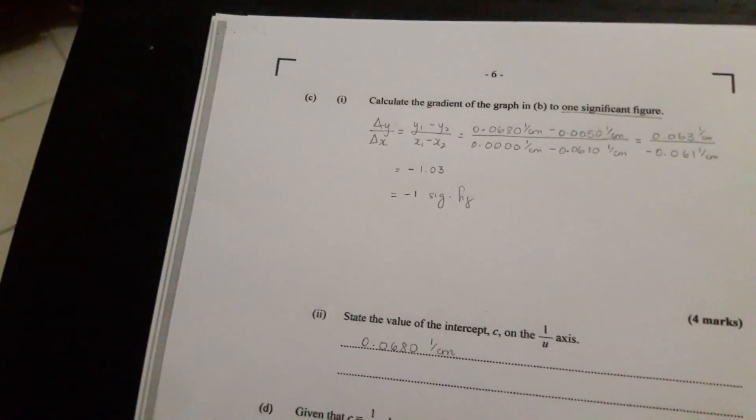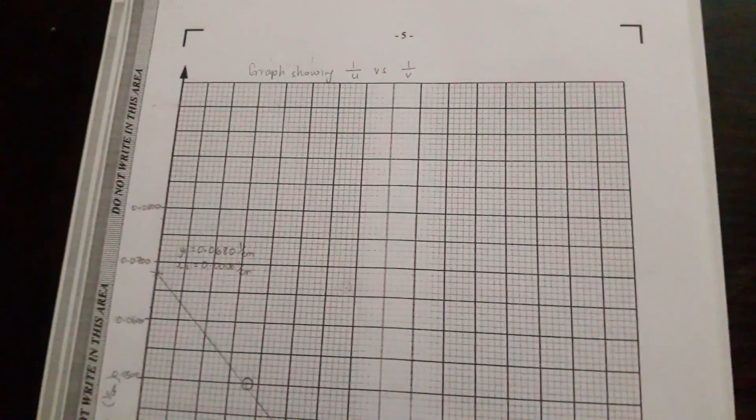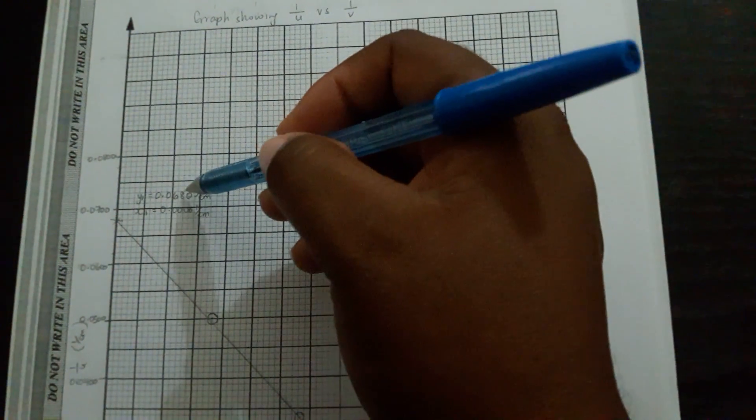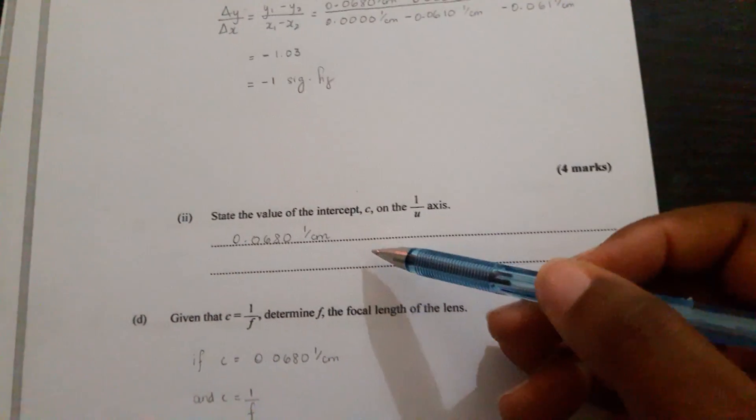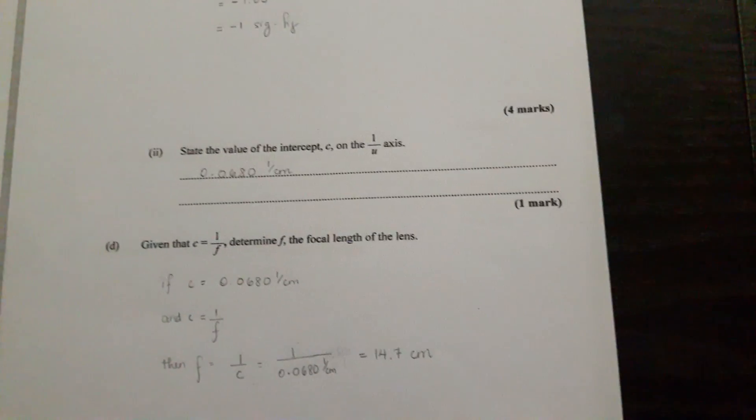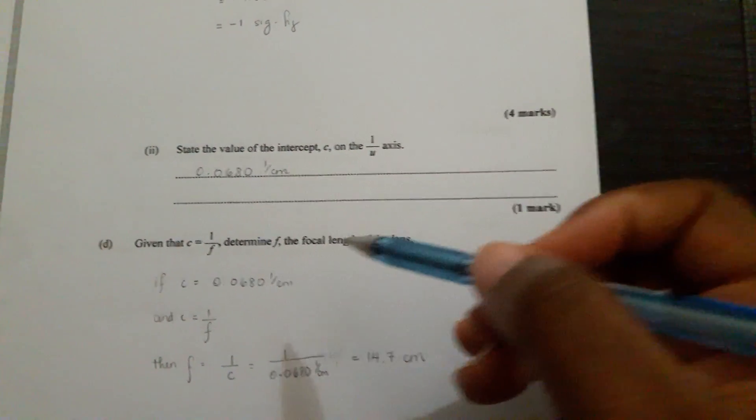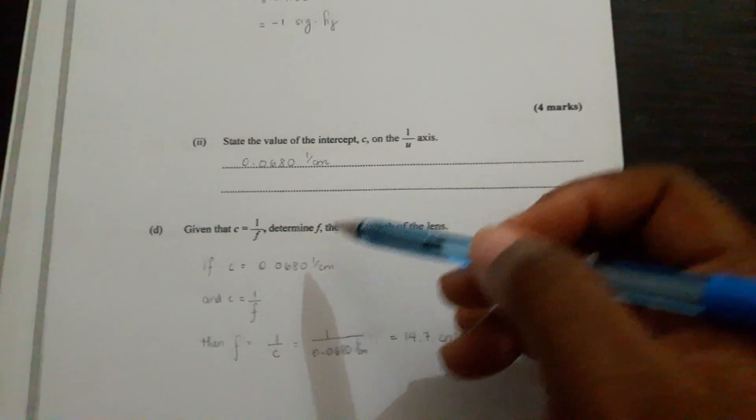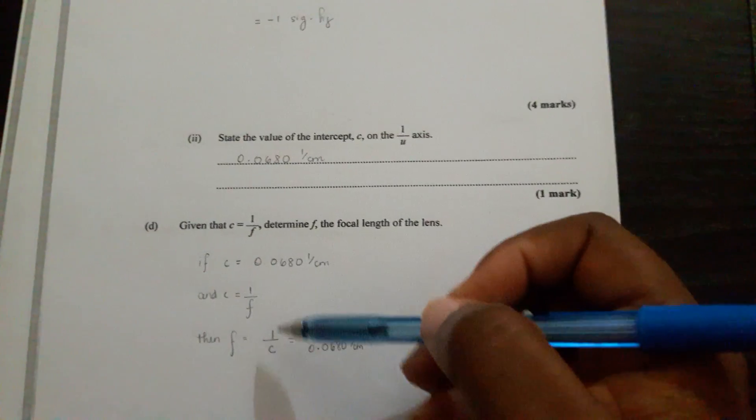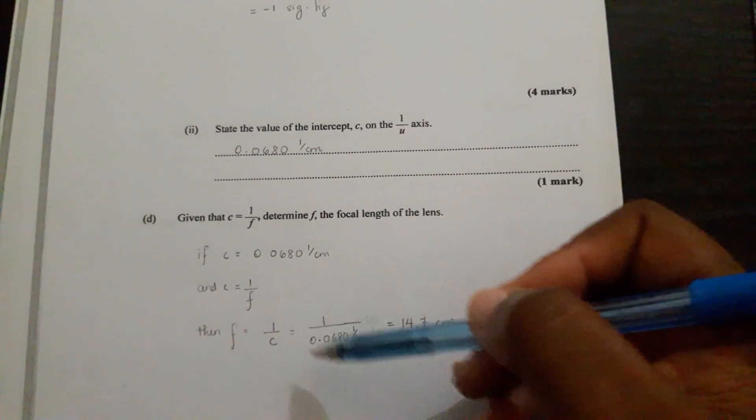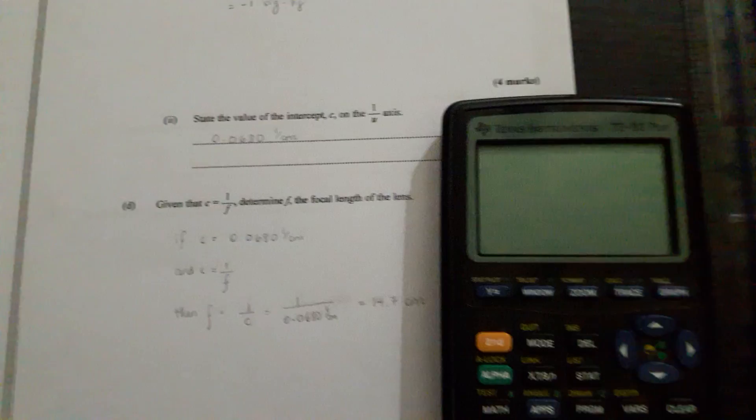The value of the intercept is based on where the line cut the y-axis, and this is where you cut the y-axis: at 0.0680 one over centimeter, or per centimeter. From there, given that c is equal to one over f, determine f, the focal length of the lens. If we have c from the graph and c is equal to one over f, it's simple transposition. Therefore, f will be equal to one over c. You get, after doing all this calculation, 14.7. I don't want what happened on question six to happen on question one, so I'm going to calculate it to make sure I recorded properly.